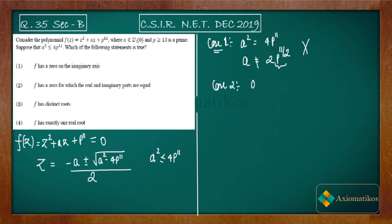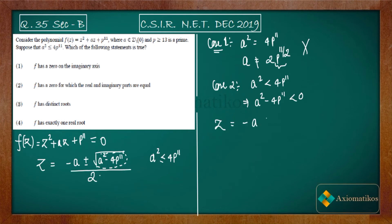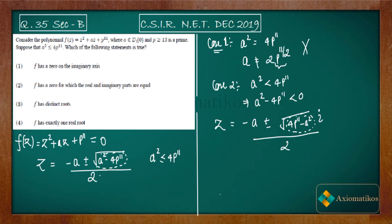Case two: a² is strictly less than 4p¹¹. This implies a² − 4p¹¹ < 0, so we have a negative value under the square root. Because it is negative, we can write the roots as z = (−a ± i·√(4p¹¹ − a²)) / 2.